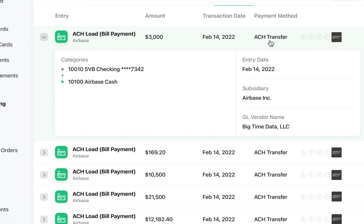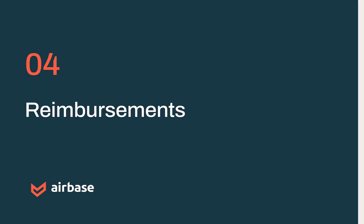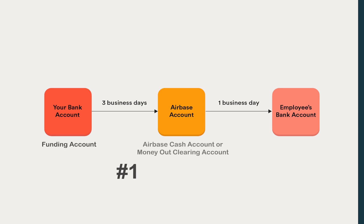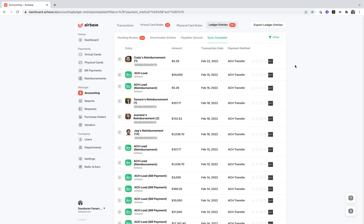Now let's talk about how reimbursements are synced to the general ledger. At 6 PM Pacific Time, all approved requests for each employee are batched into a single transaction. Airbase will pull reimbursements from your bank account and move it to the Airbase cash account or Airbase clearing account, and then later transfer that money from your clearing account to your employee's bank account.